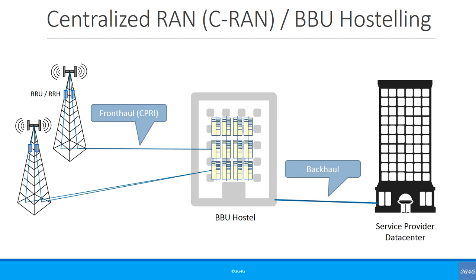One thing that's happening is that instead of having cabinets next to each tower, multiple BBUs are being co-located together in a single location. This is the concept of centralized RAN, also known as BBU hotelling. This BBU hotel has multiple BBUs connected together. Centralized RAN has advantages because it allows better interference management and visibility into different loading patterns.